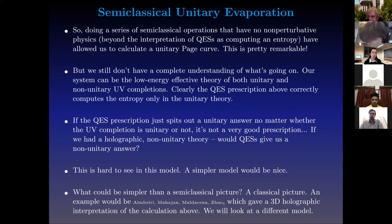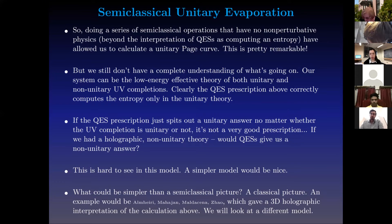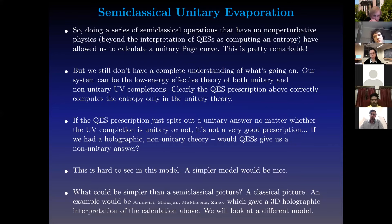What could be simpler than a semi-classical picture? The answer is the classical picture. An example of a classical picture would be this 3D holography-within-holography picture, which is an interpretation of the calculation above. But that picture still doesn't make it clear how the quantum extremal surfaces of a non-unitary holographic theory would look. So we're going to look at a different model that makes that very precise, and it also highlights certain features of the quantum extremal island.